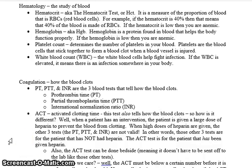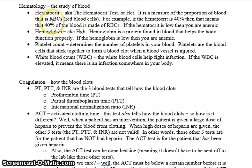Moving on to hematology, the study of blood. First, you have the hematocrit test, or HCT. It is a measure of the proportion of blood that is red blood cells. For example, if the hematocrit is 40%, then 40% of the blood is made of red blood cells. If the hematocrit is low, then you are considered anemic.